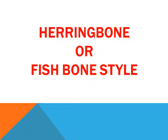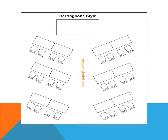Dear students, we are going to learn about a banquet setup called the herringbone or fishbone style. It is called fishbone style because it looks like the bone of a fish. As you can see in the diagrams here, all the tables are arranged in an inclined way, and all the guests are facing towards the main head table. We will have to do this particular setup in practical as well.